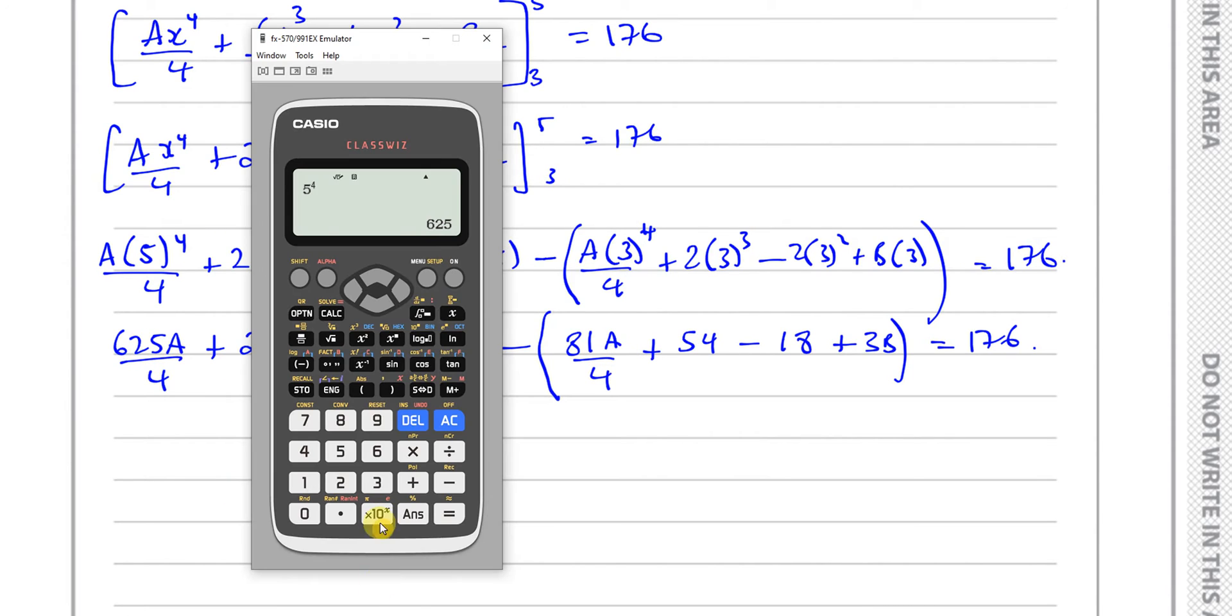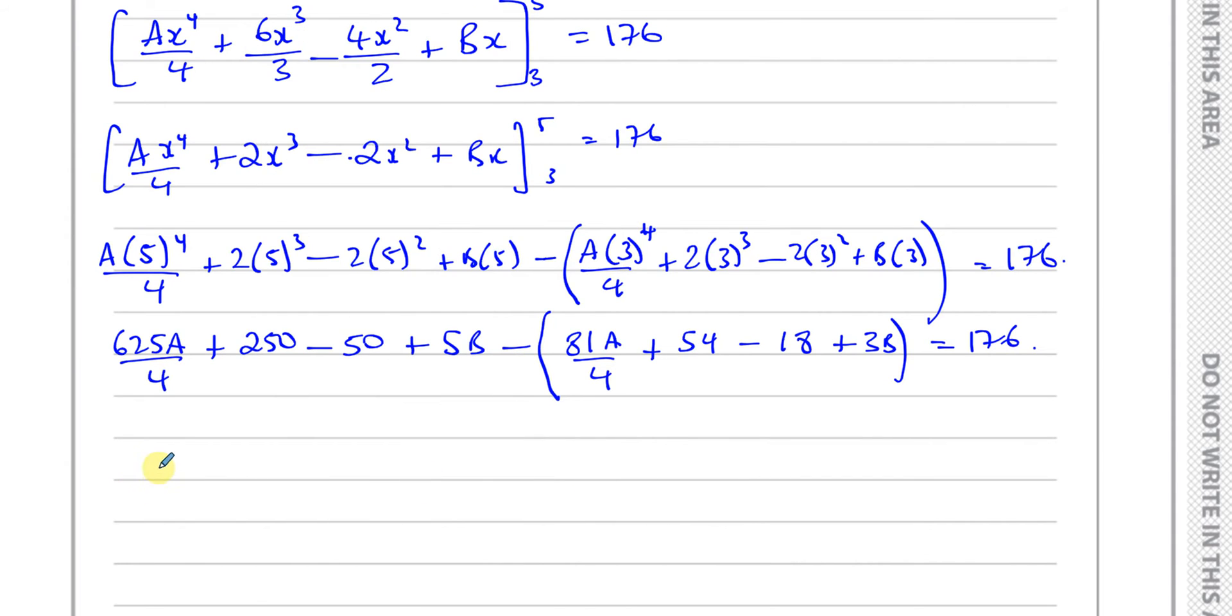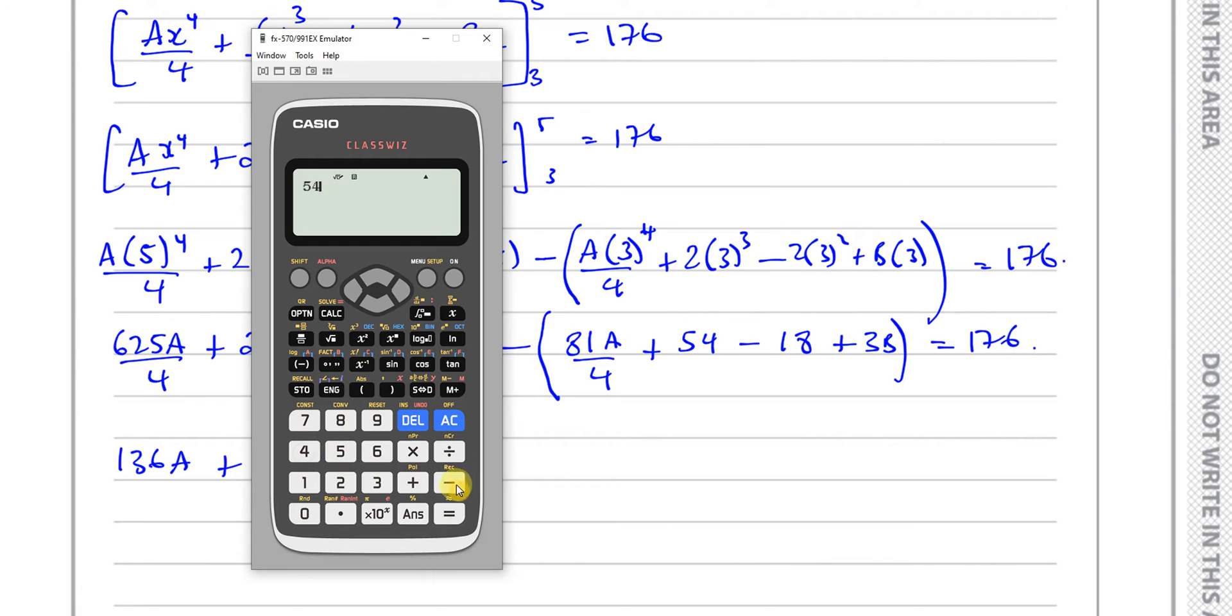Minus, and then we're going to do the same thing but substituting 3 instead of x. So a times 3⁴ over 4 plus 2 times 3³ minus 2 times 3² plus b times 3, and all of this is going to be equal to 176. So this looks like we'll be able to set up a second equation with a and b in if we do this properly.